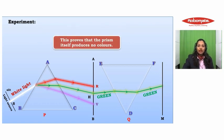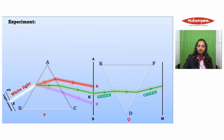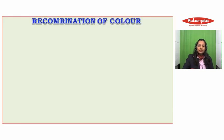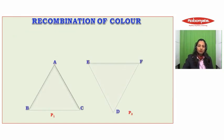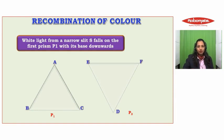Now let us see recombination of color. Arrange two prisms, P1 and P2, again of the same refracting angle with their bases inverted relating to each other.